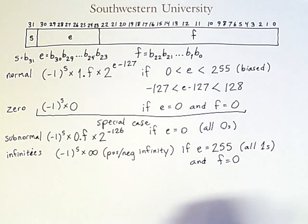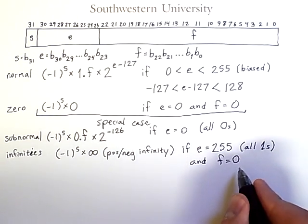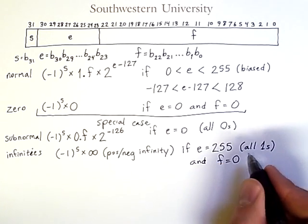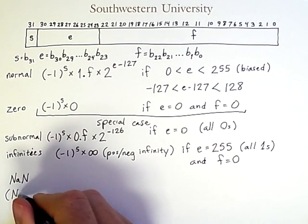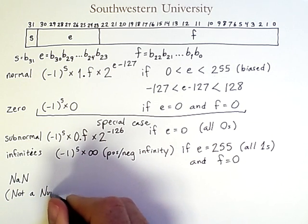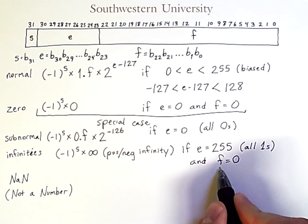And so that leaves us with the case where F is not equal to 0. So if F is not 0, but E is all ones, then the result is NaN for not a number. So this result is used to handle various exceptional circumstances. For example, dividing by infinity would not be a number. And several other strange cases will lead to a result of not a number. There are two forms of NaN, and they both depend on what the first bit of F is.